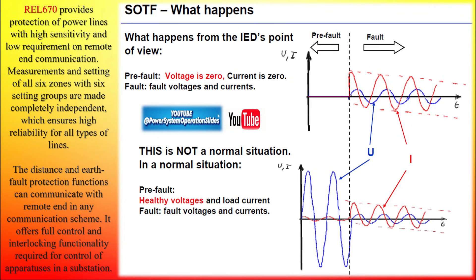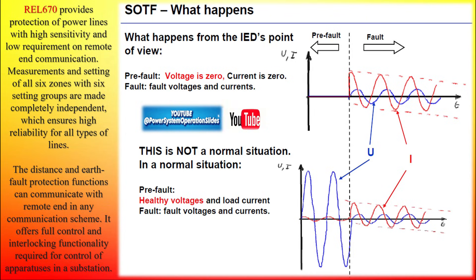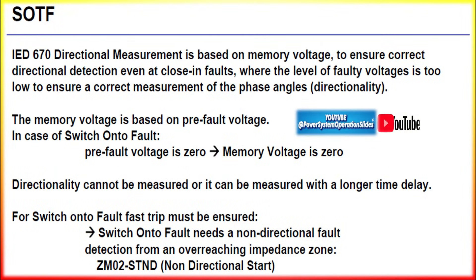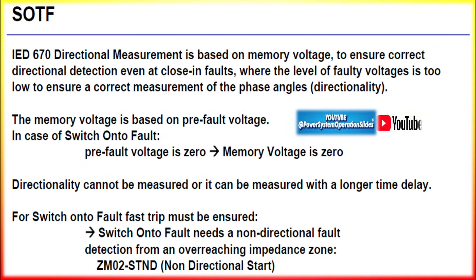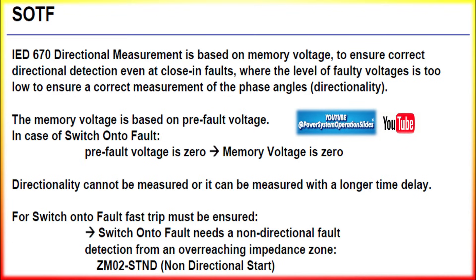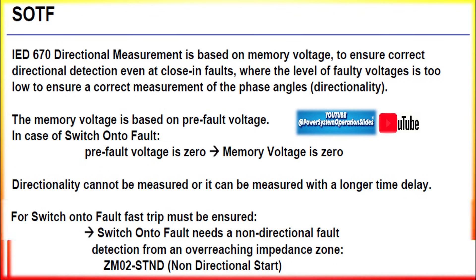In traditional distance protection schemes, the relay measures the impedance of the transmission line between itself and the fault. Different zones of protection — Zone 1, Zone 2, Zone 3 — correspond to various portions of the line. Zone 1 is typically instantaneous and protects 80 to 90 percent of the line. Zone 2 protects the remainder with some time delay. Zones 2 and 3 have time delays to ensure selectivity, so the nearest breaker operates first. However, with SOTF, the delay mechanisms are bypassed to provide instantaneous tripping, ensuring the fault is cleared without waiting for impedance zones to determine the fault location.